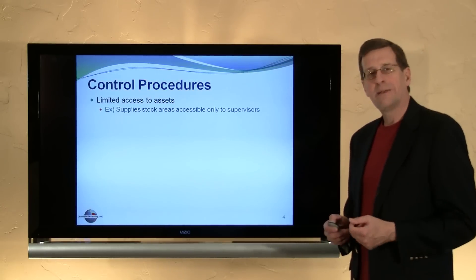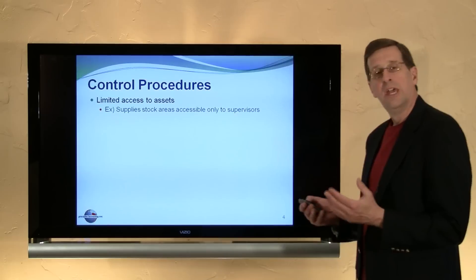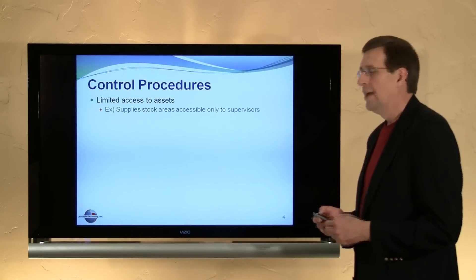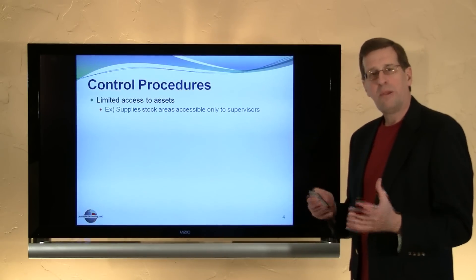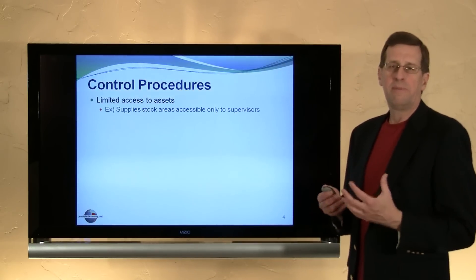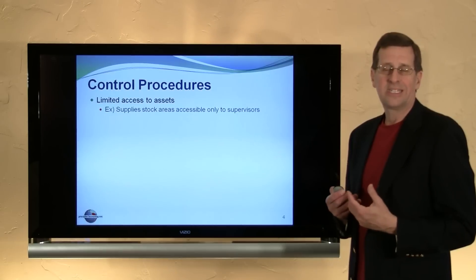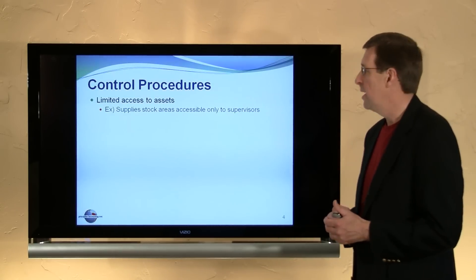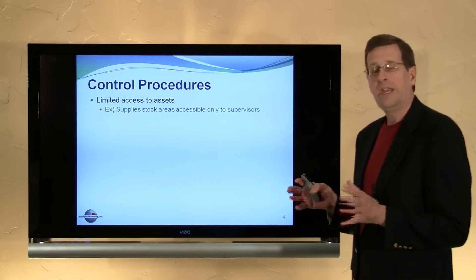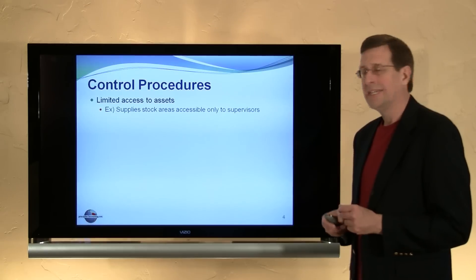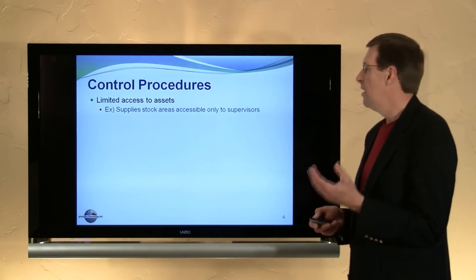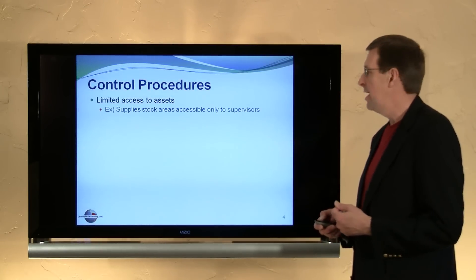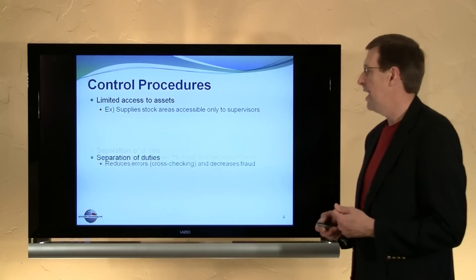Let's think about some examples of control procedures. Limited access to assets: if you have supplies or inventory, the only people that need to have access to those are those that have a need to access that inventory. You need to control access to assets, available only to persons who are appropriately authorized and have a need for that access.